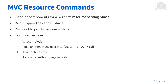MVC resource commands are the third type. These are handler components for a portlet's resource serving phase. They don't trigger the render phase. These are typically used to respond to portlet resource URLs, and some example use cases are things like auto-completion, fetching an item in the user interface with an Ajax call, doing a captcha check, or updating lists without page refreshing.